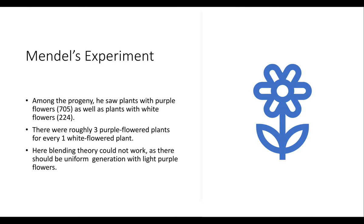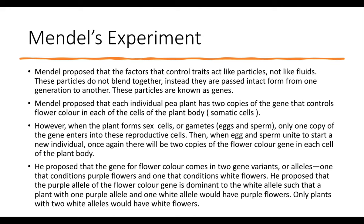Mendel proposed that the factors controlling these traits don't act like fluids but rather like particles. These particles do not blend together; rather, they are passed in an intact form from one generation to another. Mendel called these particles 'factors' — not genes; we use the word gene for our understanding. Mendel also proposed that each individual pea plant has two copies of the gene that controls flower color in each of its cells, and that when gametes — egg cells and sperm cells — are formed, only one copy enters the reproductive cell.